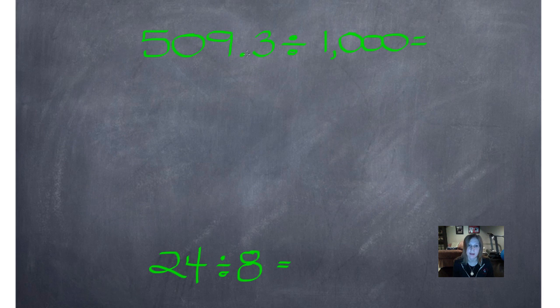So we come over to our decimal, and we're going to move it to the left three places. So I would just go one, two, three, because there were three zeros, so I'm moving it to the left three places.